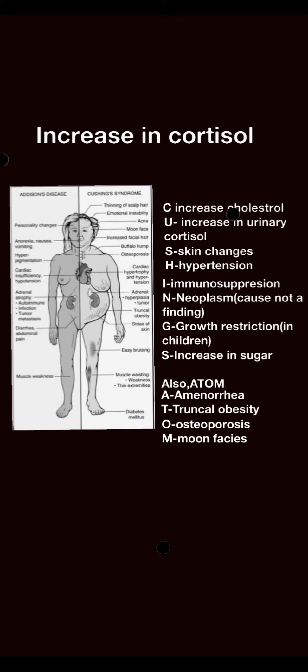T is for truncal obesity — there is an increase in weight, and the person commonly also has a buffalo hump. O is for osteoporosis. And M is for moon facies. So this was all about the clinical findings of Cushing syndrome.